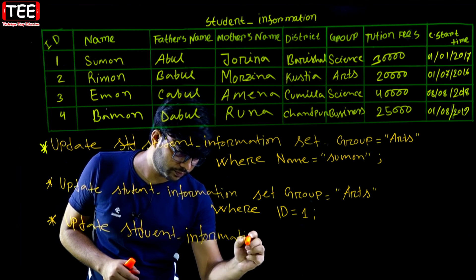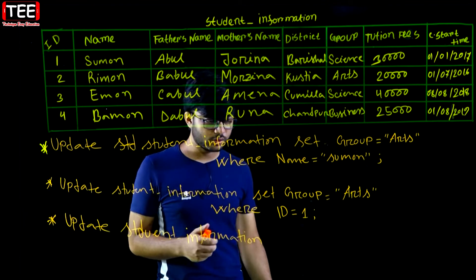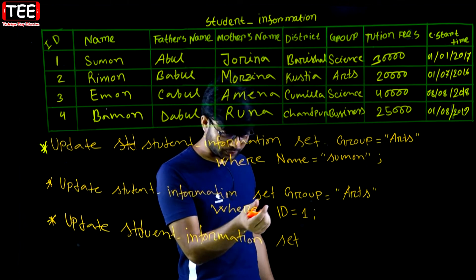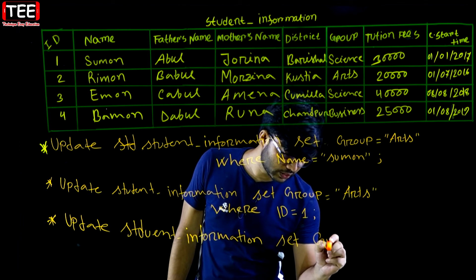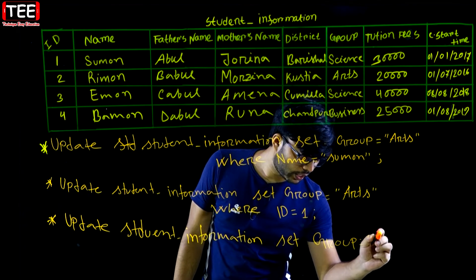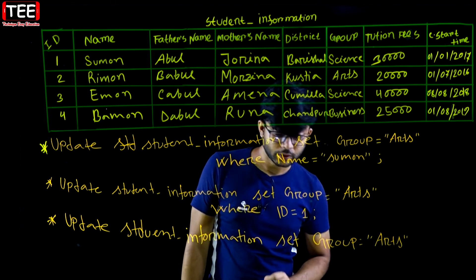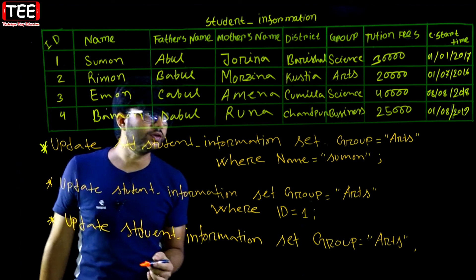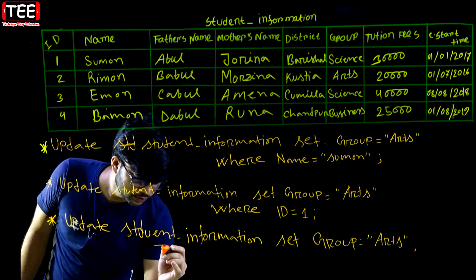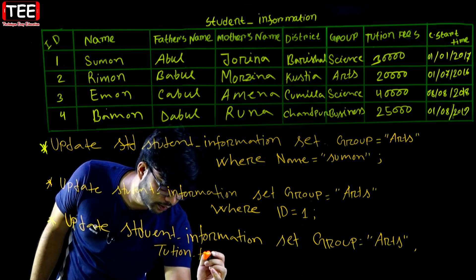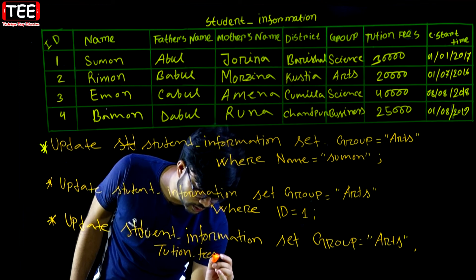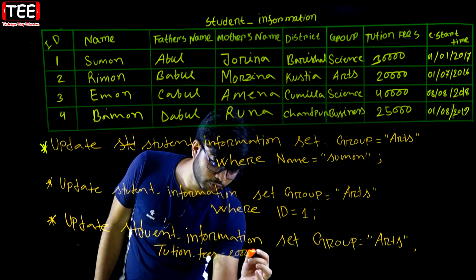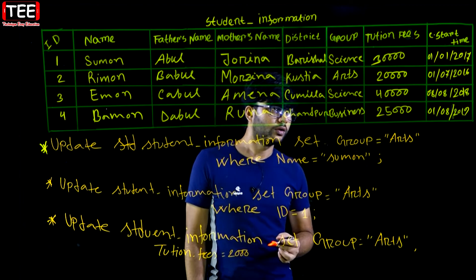Now this is the code. UPDATE student_information — UPDATE student information. After correctly, we run: UPDATE student_information SET group = arts, comma, tuition_fees. Tuition fees — the tuition fee color was 3,000.